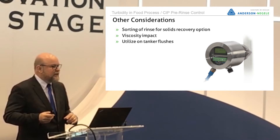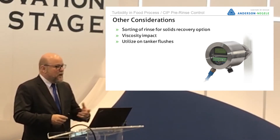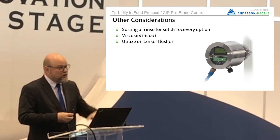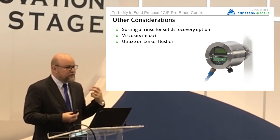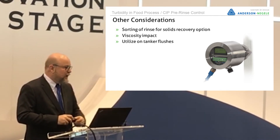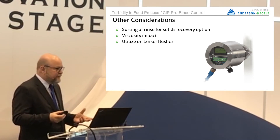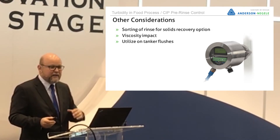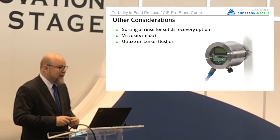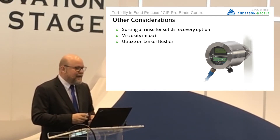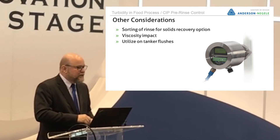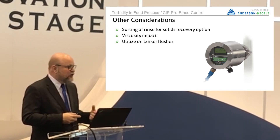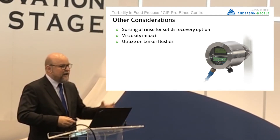Some other considerations: the sorting aspect for turbidity — when you no longer have product and you're sending that additional liquid somewhere, you're not going to send it to drain because that drives BOD. We're able to sort it, putting it to further treatment in the plant or using it for animal feed. We also have a device that completely compensates for viscosity, so if we have multiple viscosity products, the device will tell us the right time to act based on turbidity or particle content. And it is particularly good for tanker flushing, where you have a really high variability in the device you're hooking to and the way it reacts — turbidity again gives us full compensation.